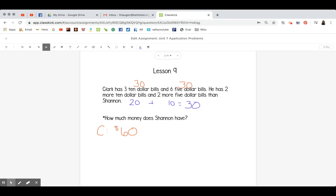So to find out how much money Shannon has, do we add the $60 and the $30 or do we subtract?